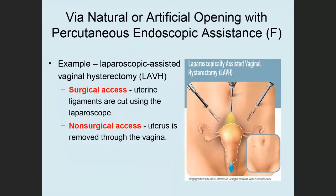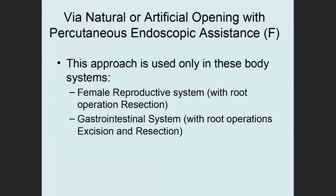Here's another example of approach F: laparoscopic assisted vaginal hysterectomy. Surgically, it goes through the laparoscope to cut the ligaments and other connections for the uterus, and then the uterus is removed through a natural opening, the vagina. This approach is only used in these body systems: female reproductive system with root operation resection, and gastrointestinal system with root operations excision and resection.